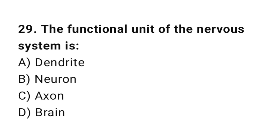Question number 29: The functional unit of the nervous system is? The correct answer is B. Neuron.